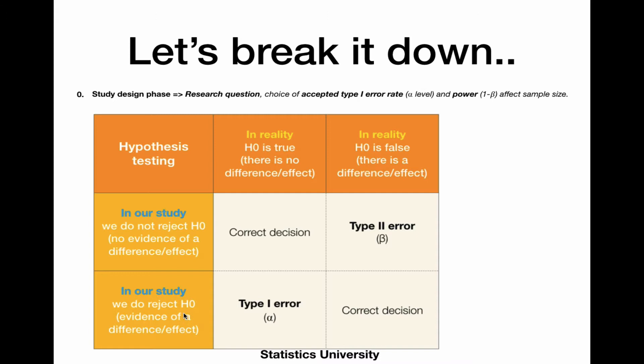These two columns here are the least interesting because we make a correct decision. But what if we do reject the null hypothesis? So, we say there is evidence of a difference, whereas in reality, no such effect or difference exists. That is what we call a type 1 error. And it's denoted by the Greek letter alpha.